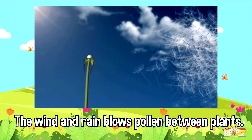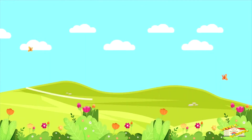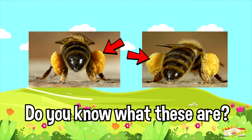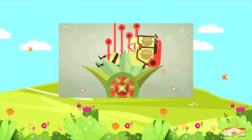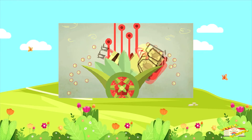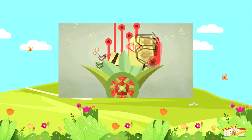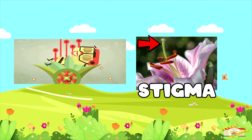The pollen is transferred to the female reproductive part of the plant. Here's a good example of how pollination occurs. Do you see the legs of that bee? This means that the bee has pollen gathered around his body. When this bee lands on another female flower, the pollen also lands on the female parts of the flower, such as the stigma. Thus pollination begins.